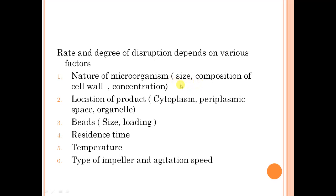The rate and degree of disruption depend on various factors. The nature of the microorganism matters — for example, gram-positive versus gram-negative cells have different cell wall complexity, and you may require multiple passes or more beads for grinding. The concentration and composition of the cell wall also matter. The location of the product is important too: whether it is in the cytoplasm, periplasmic space, or within organelles — products within organelles require more energy, while periplasmic products require the least. Bead size and loading rate must also be considered.